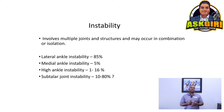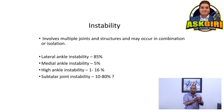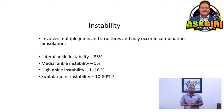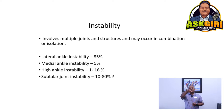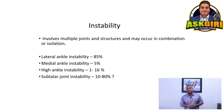Instability can involve multiple joints and structures in the ankle and foot area, either in combination or in isolation. The most common is lateral instability — the outside of the ankle — because that's where the ligaments get sprained. When you walk, that outside of the ankle is the most vulnerable.